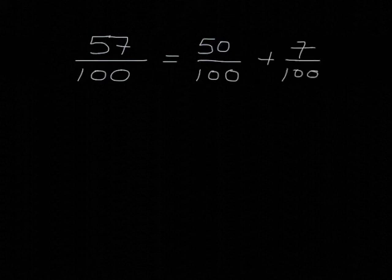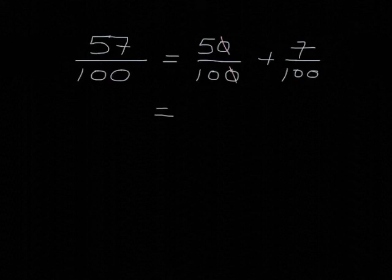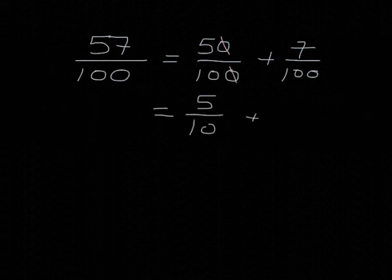Now, 50 over 100 is a fraction that we can simplify. And if we divide top and bottom of this fraction by 10, we will get 5 over 10. And we'll leave the 7 over 100 as it is.